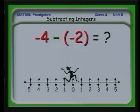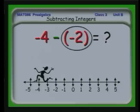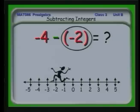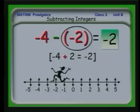Let's look at another example. We start at 0 facing to the right. Minus 4 tells us to back up 4. Then a minus sign says turn around. Next we have a minus 2, which says back up 2. We wind up at minus 2. The total final effect is minus 2. We can see that minus 4 minus a minus 2 equals minus 4 plus 2, so again the effect of minus a minus is to act as a plus.